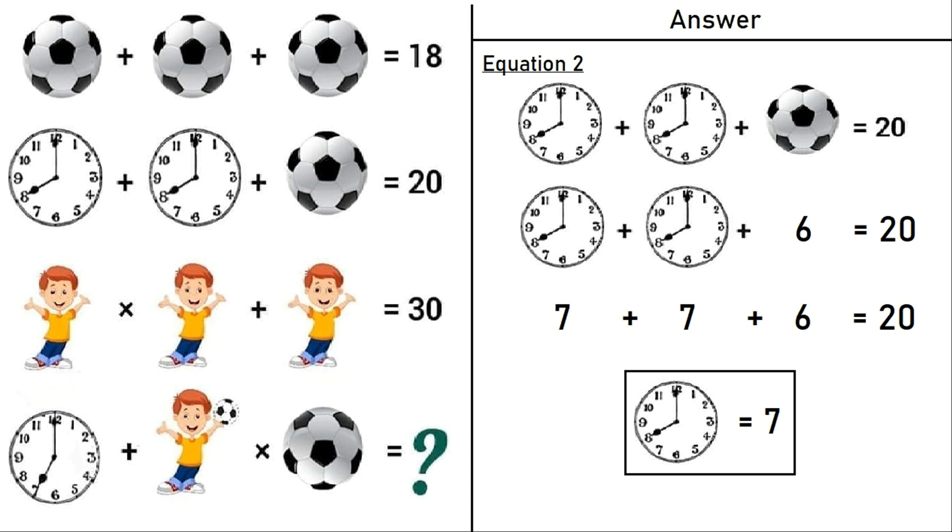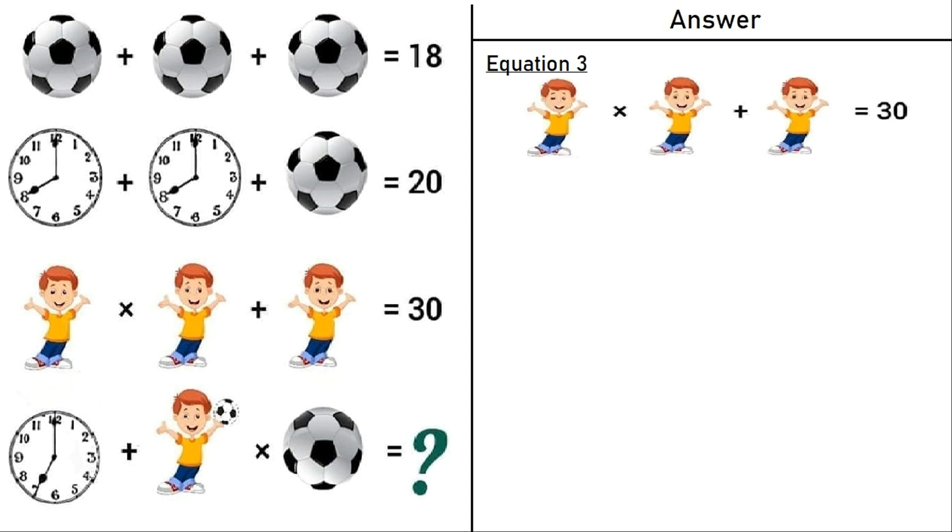A clock is equal to 7. Now moving on to equation number 3 which says a boy times a boy plus a boy is equal to 30. 5 times 5 plus 5 is equal to 30. So a boy is equal to 5.